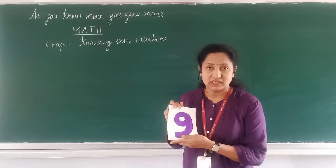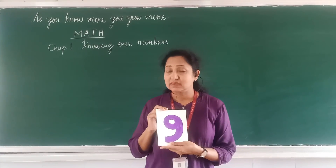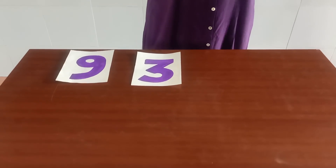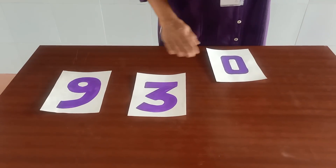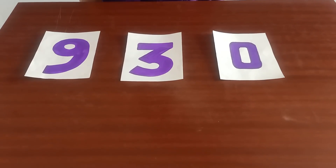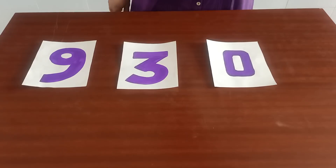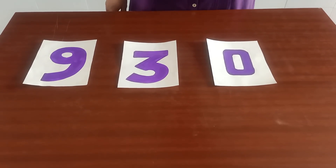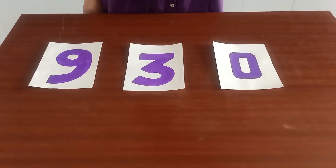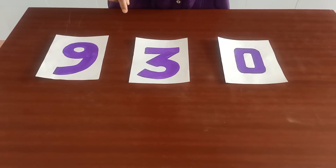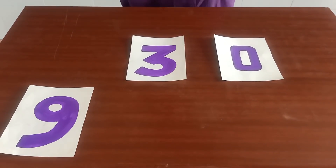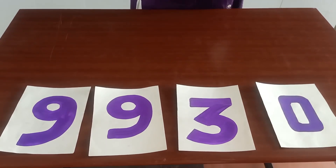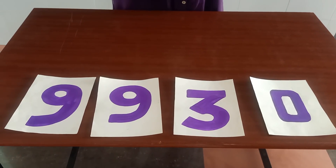Here we are with the second activity. Again I am using the number cards, but this time it's a little bit tricky. I am giving you only 3 digits: 9, 3, and 0. You have to use 3 digits but form a 4-digit number — you are allowed to use any one digit twice. If you are forming the greatest number, you will choose the greatest digit, which is 9, and use it twice. So: 9, 9, 3, and then 0. Here you got the 4-digit number 9,930.